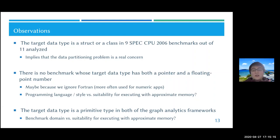The last observation is that the target data type is a primitive, like float and int, in both graph analytics frameworks. This leads to another question: maybe the benchmark domain might affect the suitability for executing with approximate memory.